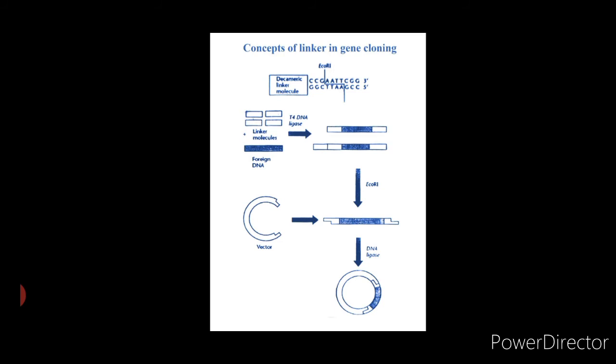In this case, the same target site EcoR1 is produced at each end of the foreign DNA in the recombinant vector, and so enables the foreign DNA to be excised and recovered after cloning and amplification of the vector in the host bacterium.